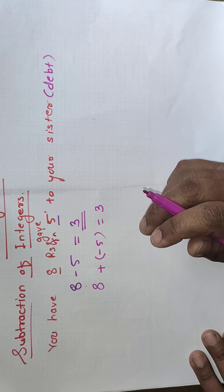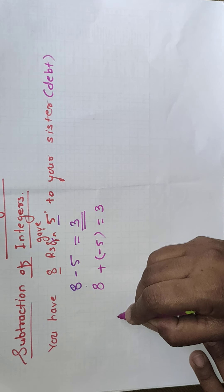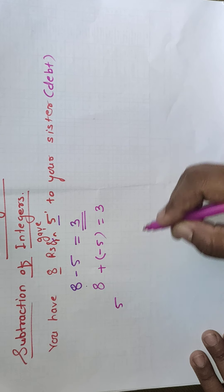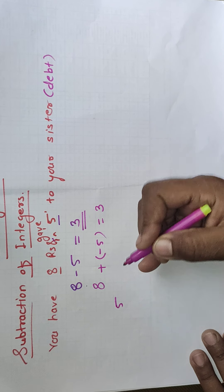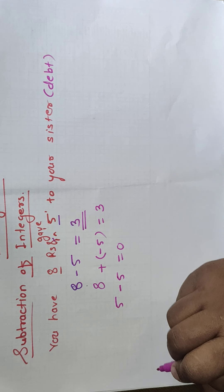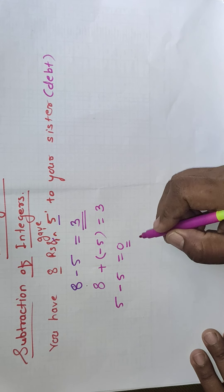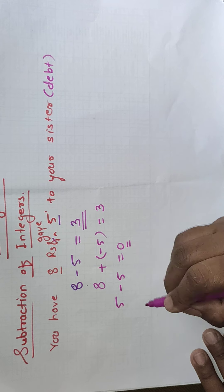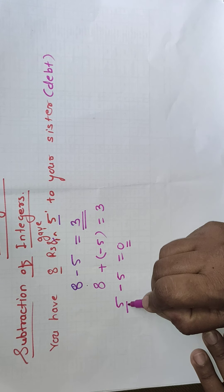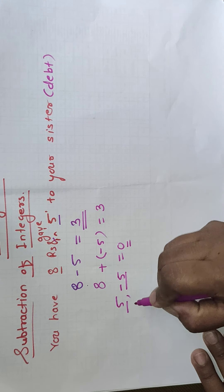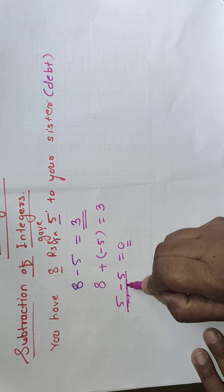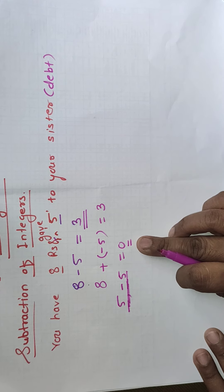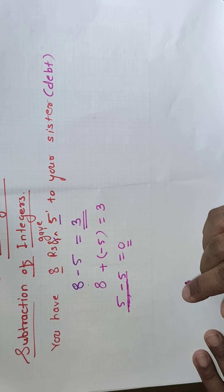This is a revision, because we see that the opposite numbers — 5's opposite number is minus 5, and the subtraction of opposite numbers is 0. The subtraction of opposite numbers is 0, that also we see.